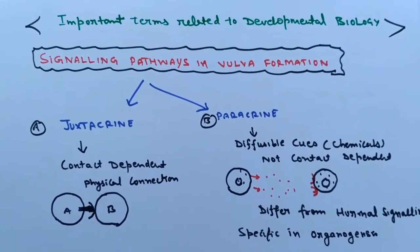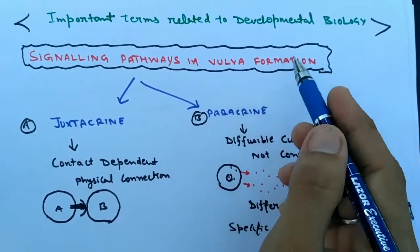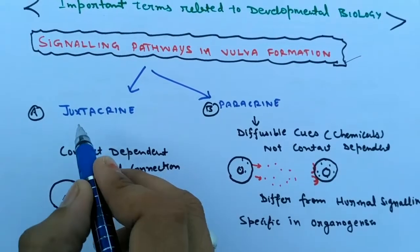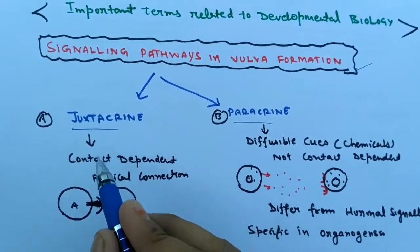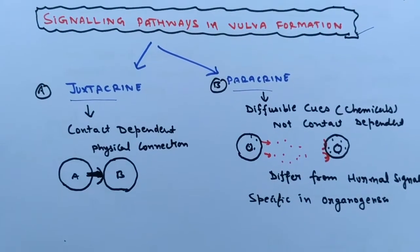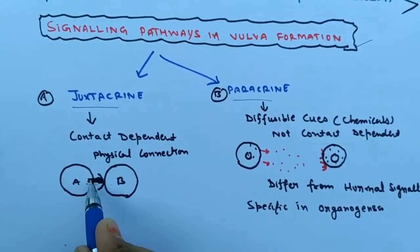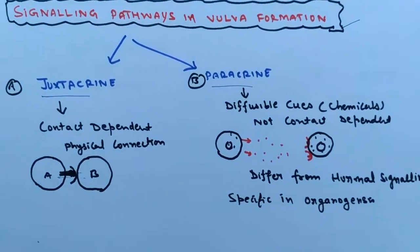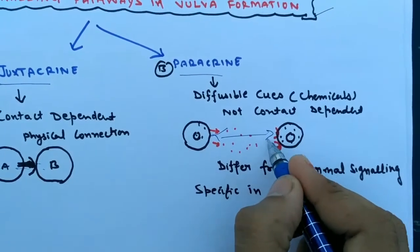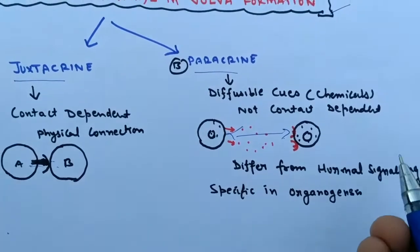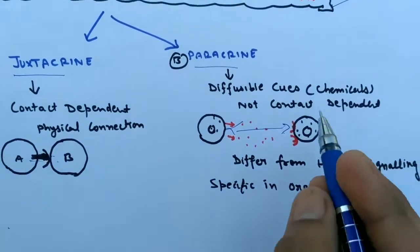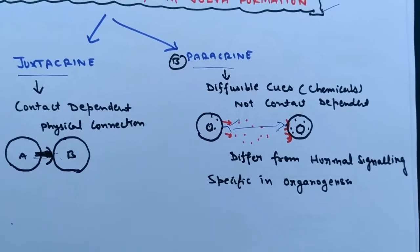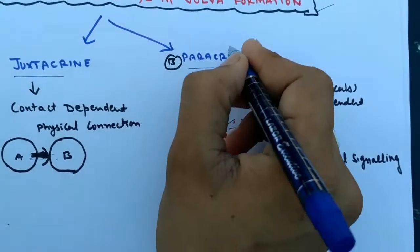There are some important types of terminology for understanding the development phenomena. First is the signaling pathway in vulva formation: juxtacrine and paracrine. Juxtacrine is a physically contact-dependent signaling pathway where the transmembrane receptor forms physical contact and cues are directly transmitted to the cell. In paracrine, there is some distance between two cells and the cues are diffusible. These chemical signal proteins diffuse some distance and are received by the receptor. But it differs from hormonal signaling that occurs in adult animals when endocrine glands are formed. Paracrine is specific to developmental phenomena.